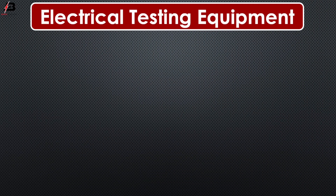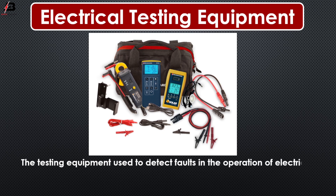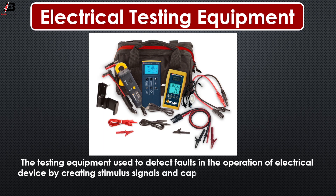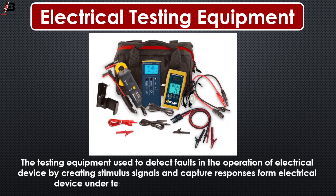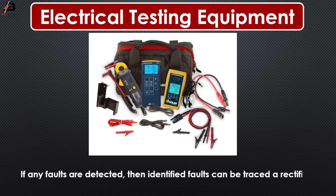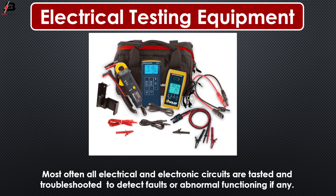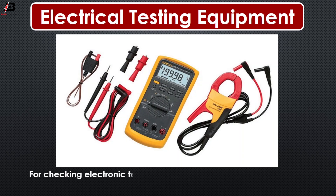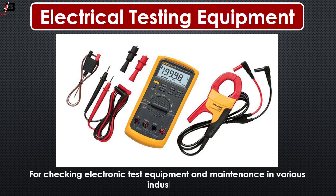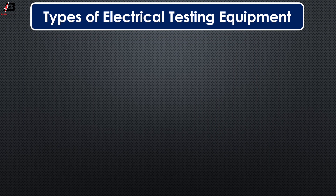So viewers, let's start. Electrical testing equipment. The testing equipment used to detect faults in the operation of electrical devices by creating stimulus, signals and capturing responses from electrical devices is known as electrical test equipment. If any faults are detected, then the identified fault can be tracked and rectified using electrical testing equipment. Most often, all electrical and electronic circuits are tested and troubleshot to detect faults or abnormal functioning. For seeking electronic test equipment and maintenance in various industries, the 9 common types of electrical testing equipment are discussed in this video.